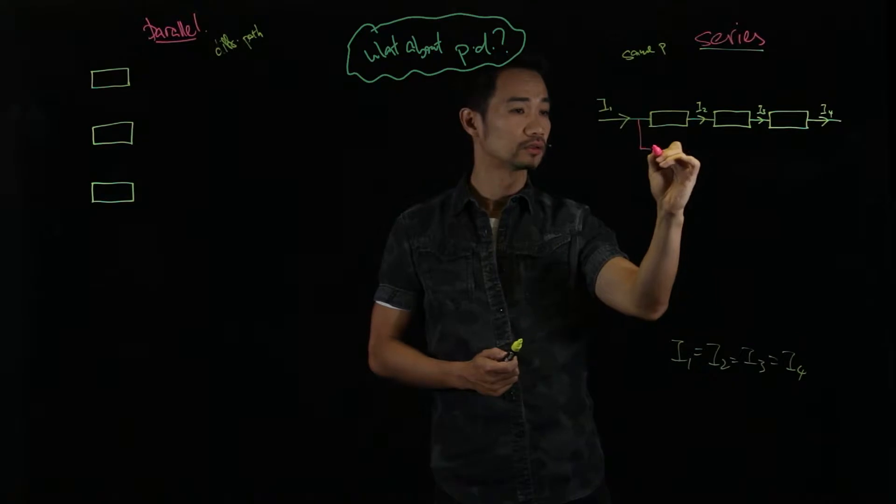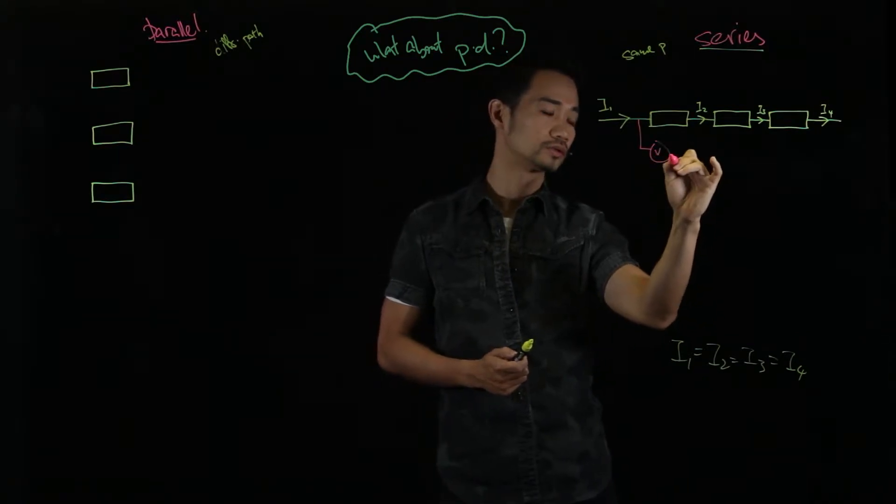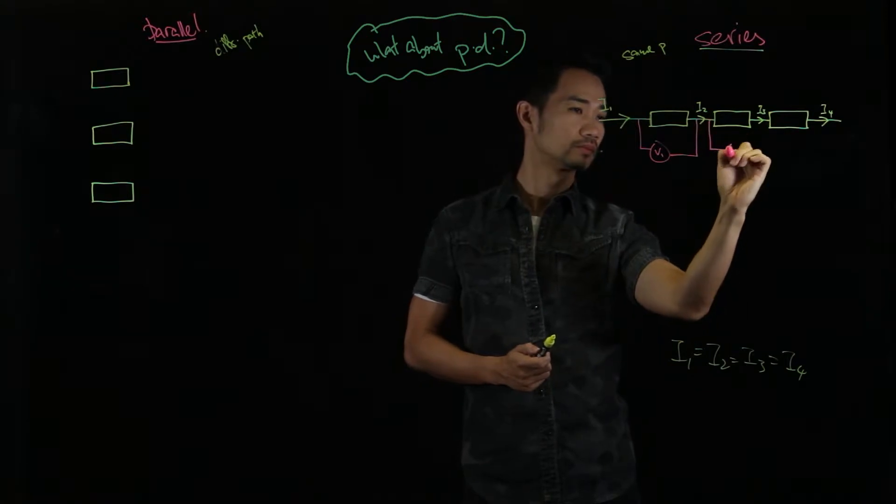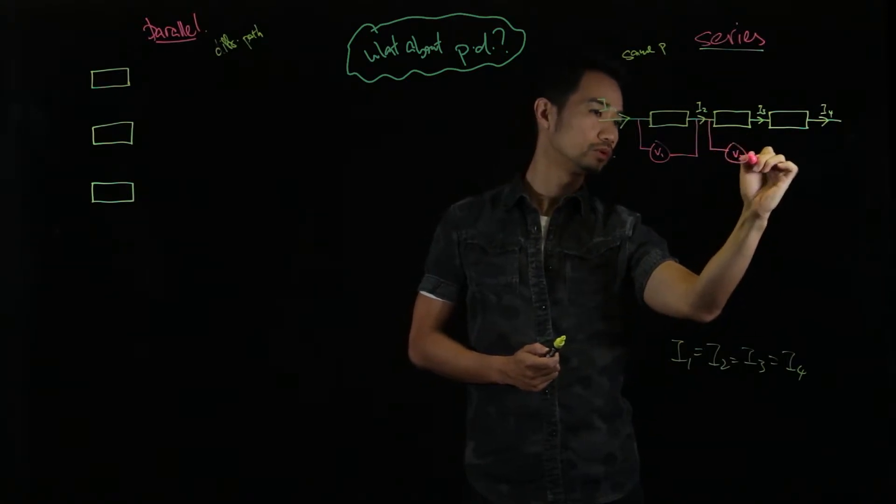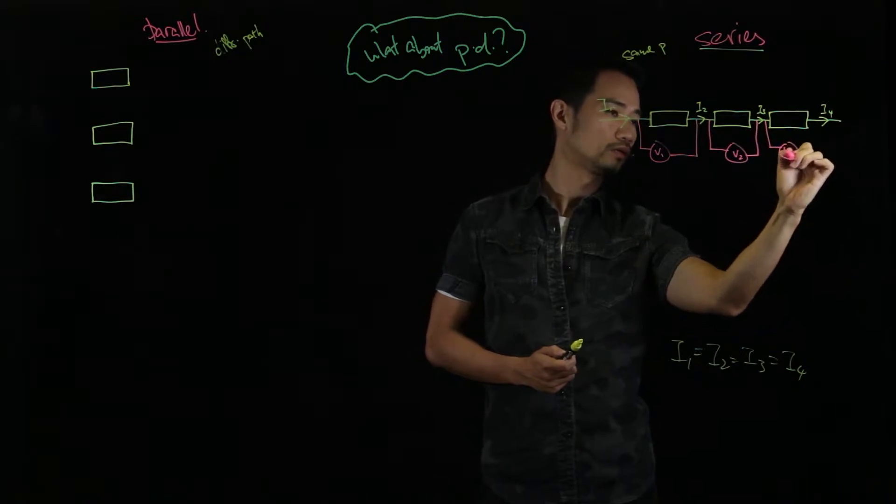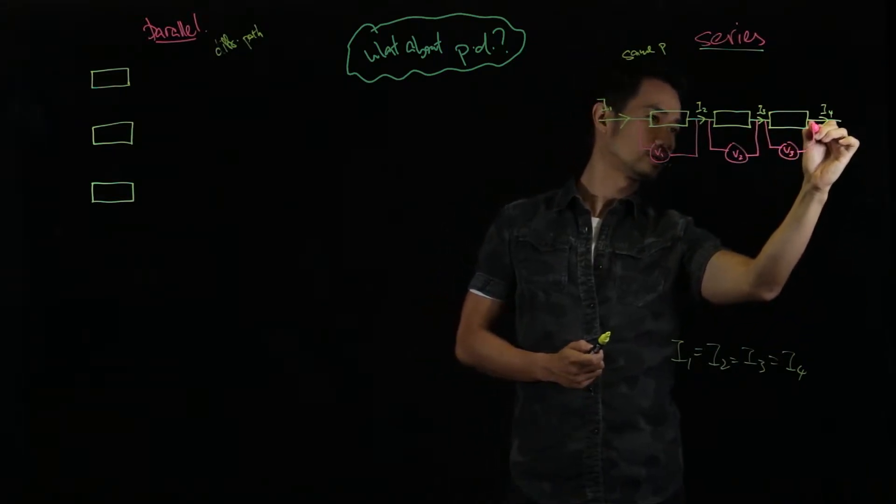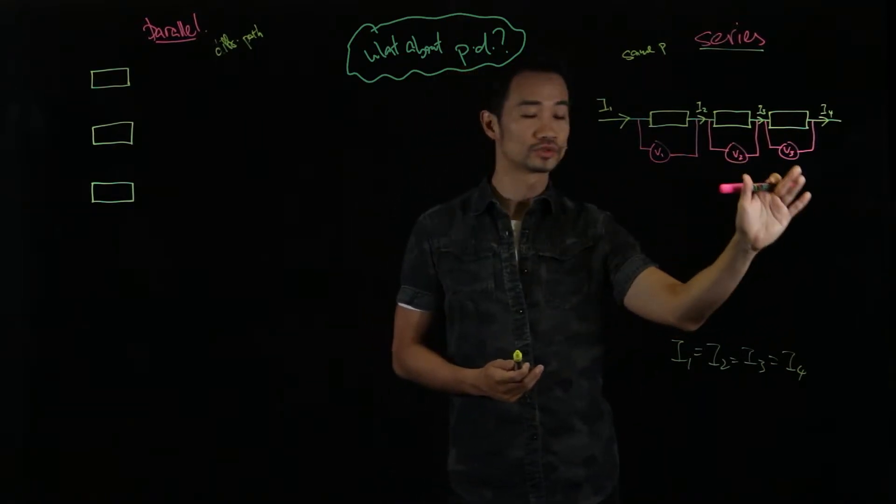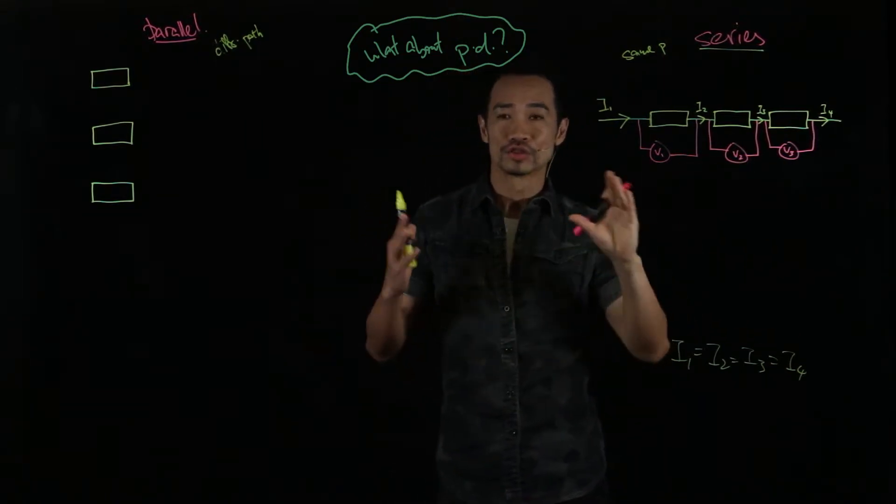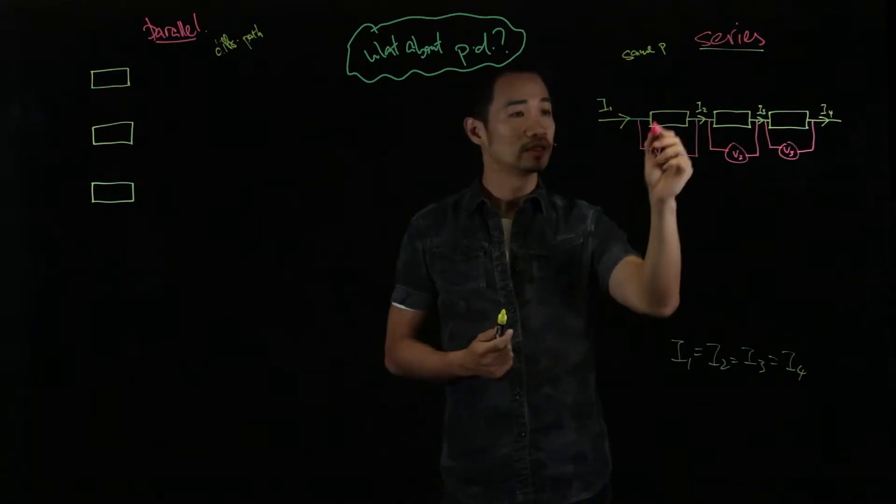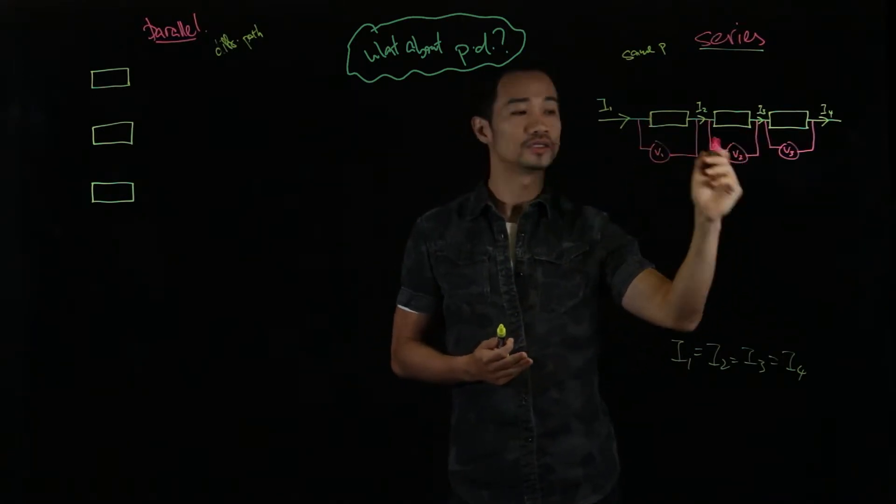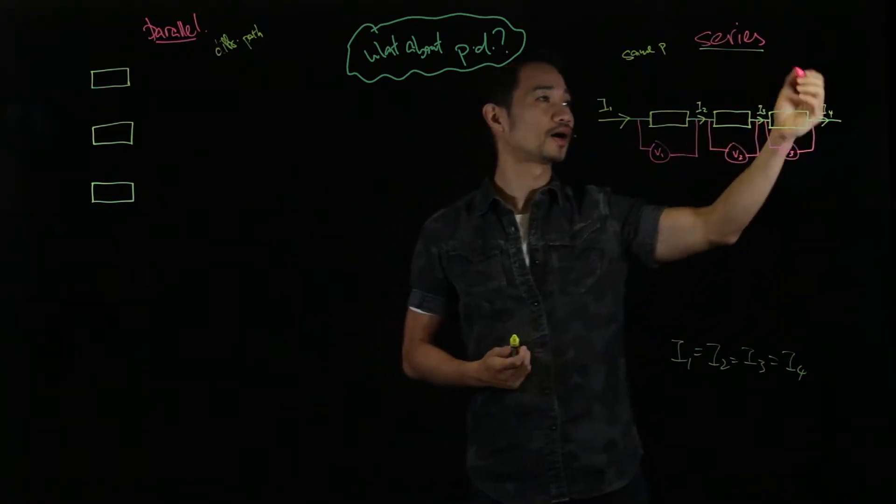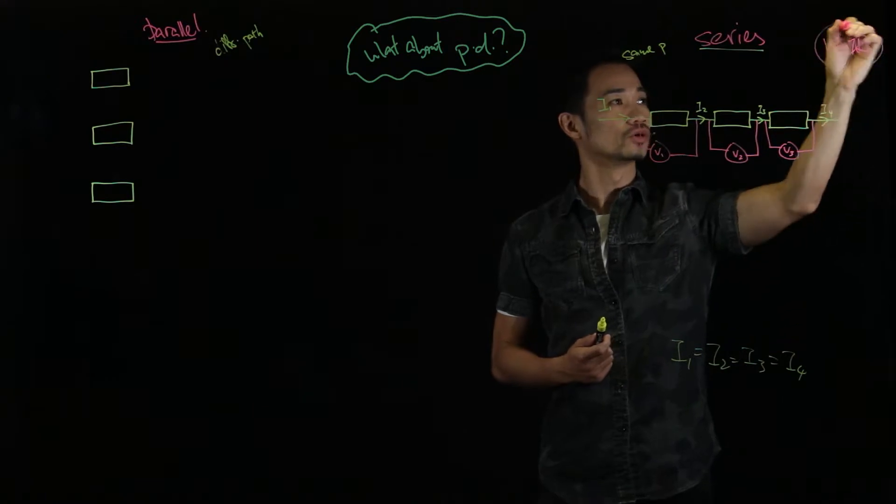What if we connect voltmeters across? I call this V1, V2 and V3. What is the relationship? Does V1 equals to V2 equals to V3? The answer is not necessary. Each potential difference is actually dependent on the resistance. It goes by, again, our Ohm's law.